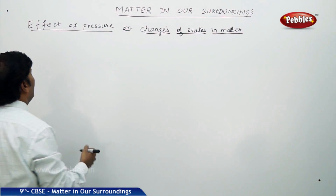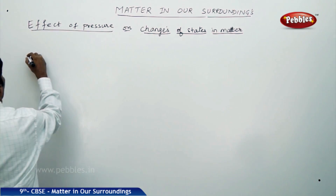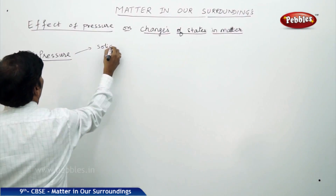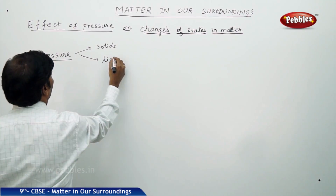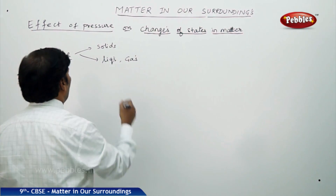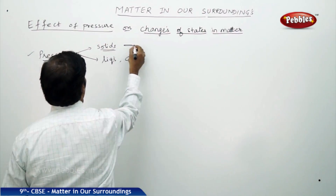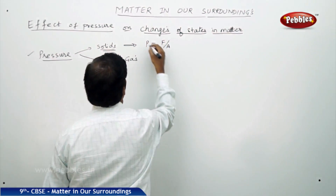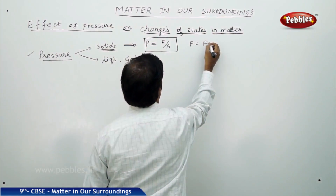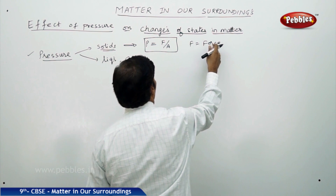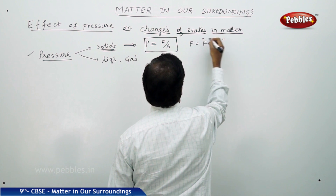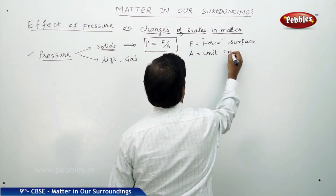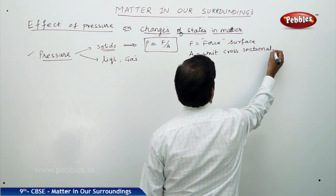Pressure can be applied to solids, liquids, and gases. For solids, we use the formula: pressure equals force per unit area, where F stands for force applied on the solid surface, and A is the unit cross-sectional area.